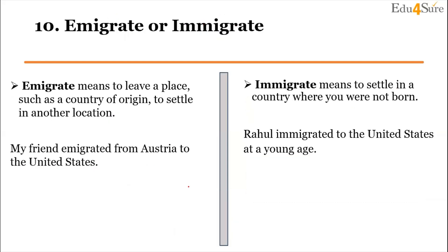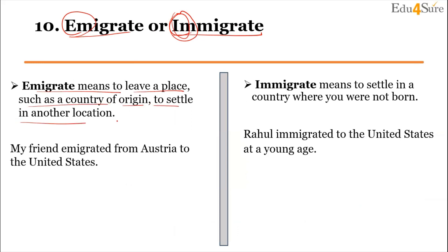Next, we have 'immigrate' and 'emigrate'. First, let's see what 'emigrate' means. Emigrate means to leave a place, such as a country of origin, to settle in another location. So emigrate means to leave a place.